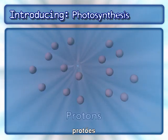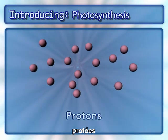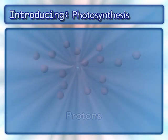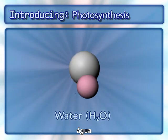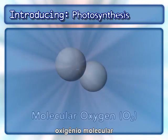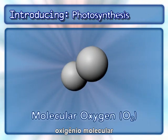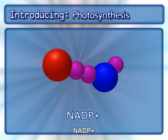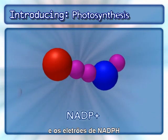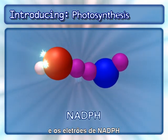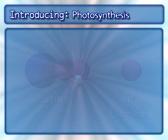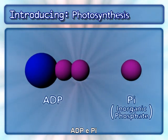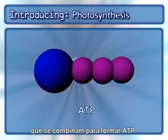Additional key components include protons, water, molecular oxygen, proton and NADP with the electrons to form NADPH, and ADP and PI, which combine to form ATP.